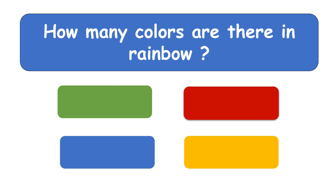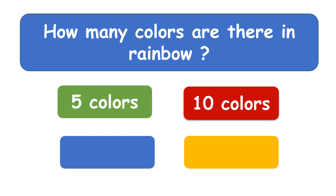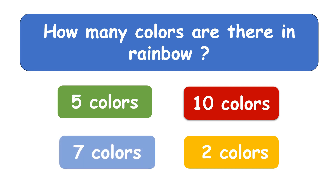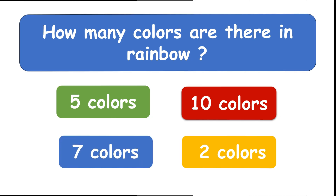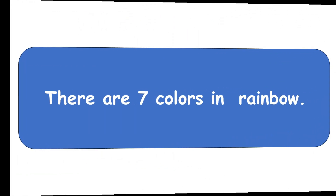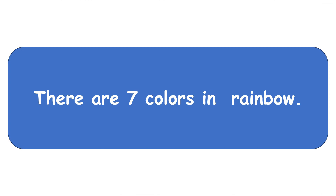How many colors are there in a rainbow? Seven colors. There are seven colors in a rainbow.